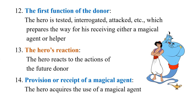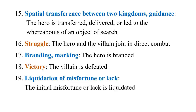Fourteenth: Provision or Receipt of a Magical Agent — the hero acquires the use of the magical agent, like a genie. Aladdin goes to the cave, gets the lamp, rubs it, and here is a donor. Then fifteenth: the hero gets the agent but is yet to go to the destination — the hero is transferred or led to the whereabouts of the object of the search. You get a flying carpet or a horse — some means of transport — and with the help of the donor or that magical object, you move.